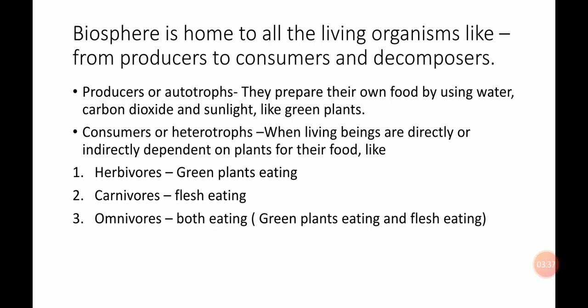Now the next is omnivores. An omnivore is an animal that eats both plants and animals for their main food. Examples of omnivores include bear, pig, rat, and yes, human beings as well. Human beings are also known as omnivores because we eat both kinds of things — whether it is green plants or whether it is meat or flesh.